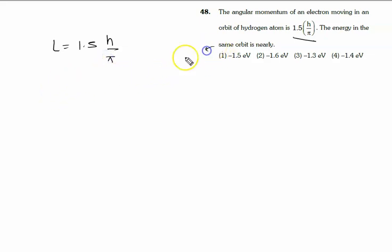Now first of all, which orbit is this? What number of level? Energy level. Then we will put E equal to minus 13.6 Z square upon n square electron volt. Now let's see, we will find the n value because Z value is 1 for hydrogen. We will put n value in this equation.